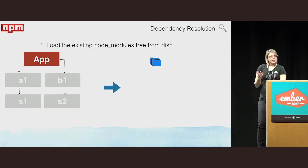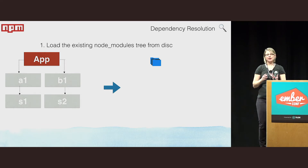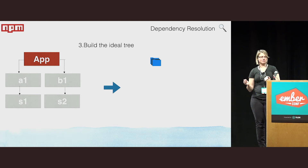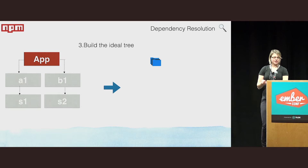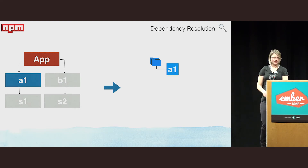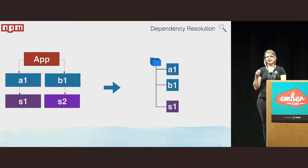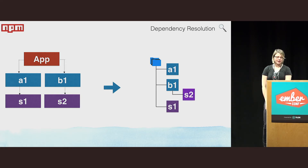Let's start with NPM's dependency resolution phase. First, we load the existing node_modules folder from disk — in this case it's empty. Second, we clone the current tree — no current tree, so that's fine. Then comes the exciting phase: building the ideal tree. We resolve A1 to the top level, S1 also at the top level since we want things as flat as possible, then B1 at the top level, and finally S2 — because there's already an S in node_modules with a different version — gets resolved as a child dependency of B1.